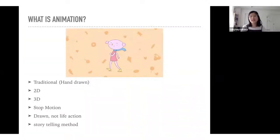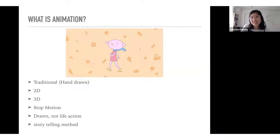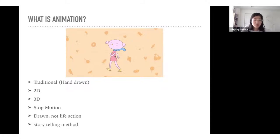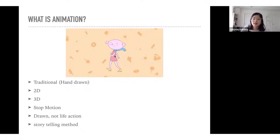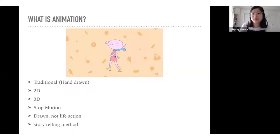So what is animation? Essentially it's just a form of storytelling. It's mostly drawn — not live action — it's mostly an imaginative world. There are different types of animation. Traditional animation is hand-drawn animation. We don't really do that as much at school now; it's mostly on computer, digitally. People used to draw each scene and each frame by hand, which is super hard work.